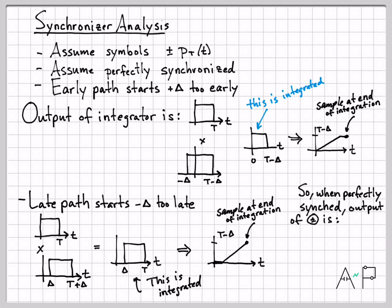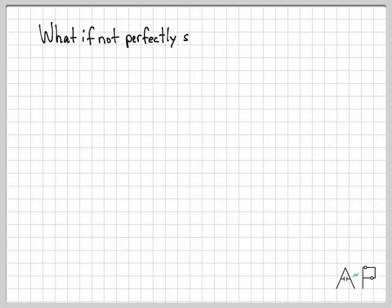The input to the VCC is the early path minus the late path. We had T minus delta on the top path, subtract T minus delta from the bottom path, and get an output of zero. That zero input to the VCC tells it everything is fine — don't do anything. That is exactly what we want when we're perfectly synchronized.